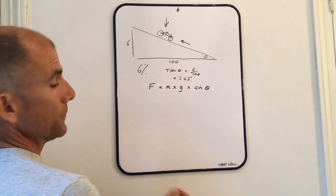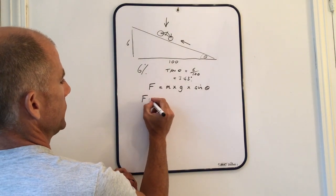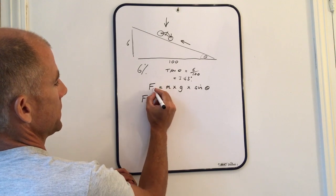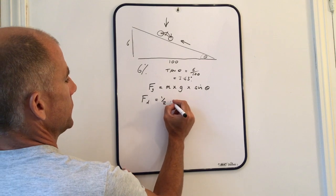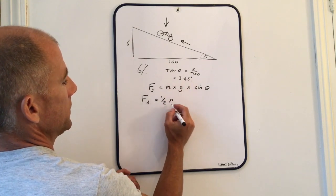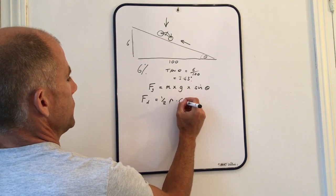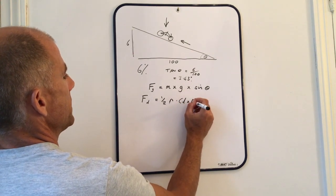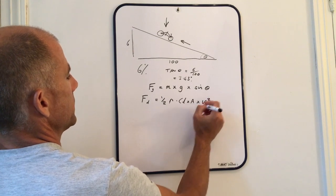The other force which is in play here is the drag force. We call that Fd. This is a half rho, which is the density of air, times your drag factor, times your area, times your velocity squared.